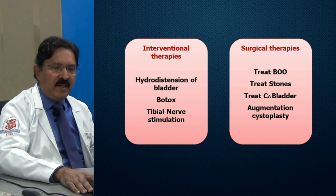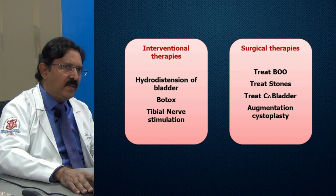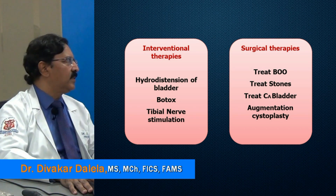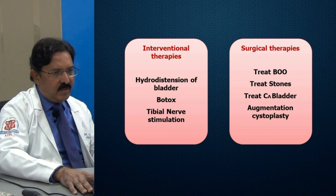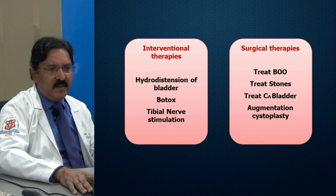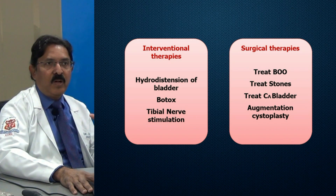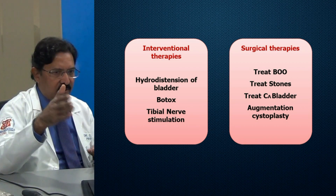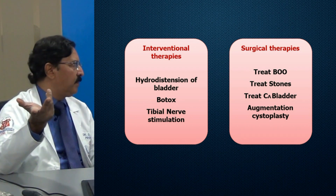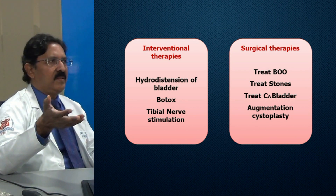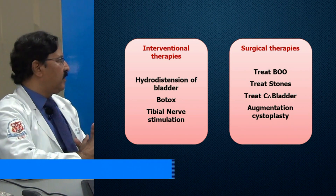These are interventional therapies. What I mean by interventional therapy includes intravesical instillation for a patient with overactive bladder, or BOTOX injection, or tibial nerve stimulation. If that is also not to the patient's liking or you are not happy about these modalities, then you consider surgical options — for example, treating bladder outlet obstruction, stricture treatment, treating bladder cancer, and in the rarest of rare situations, I have done augmentation cystoplasty, which is done mostly in a neurological setting when the upper tracts are getting compromised.